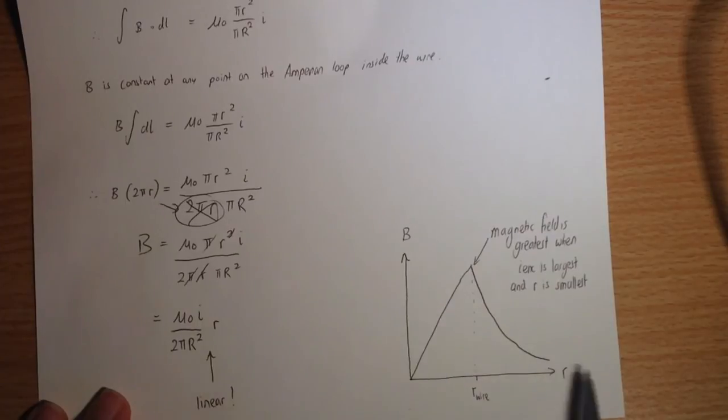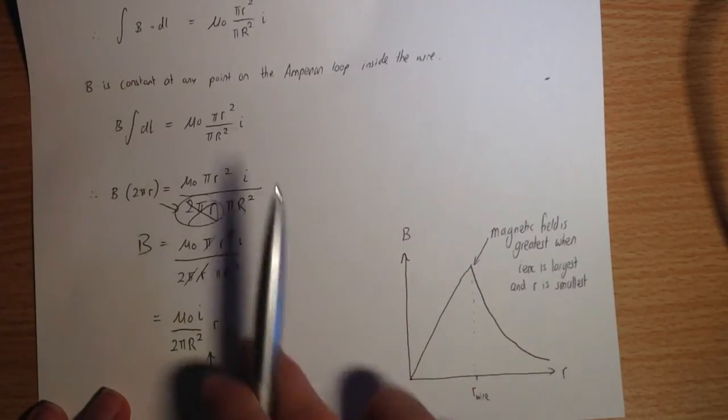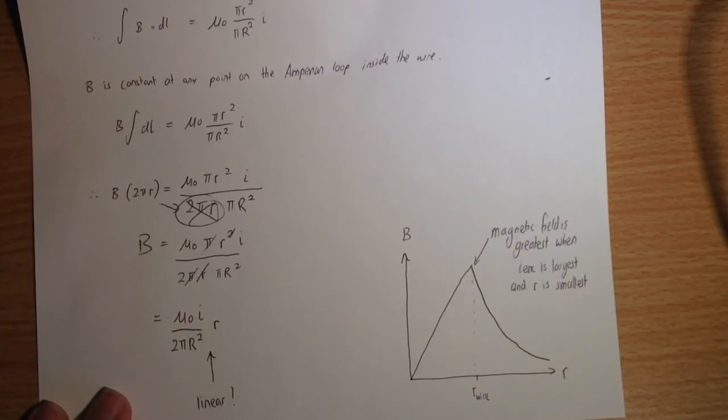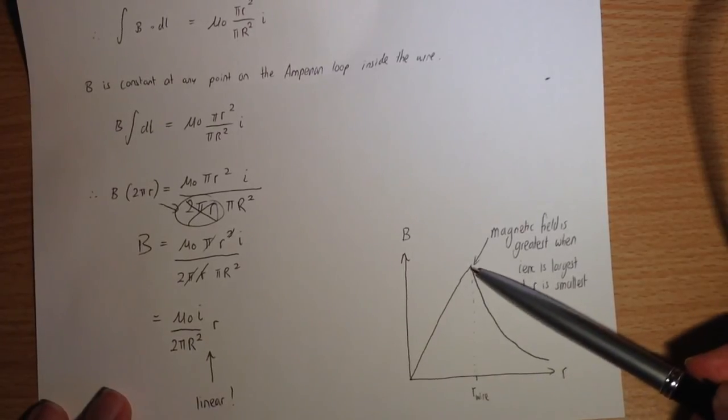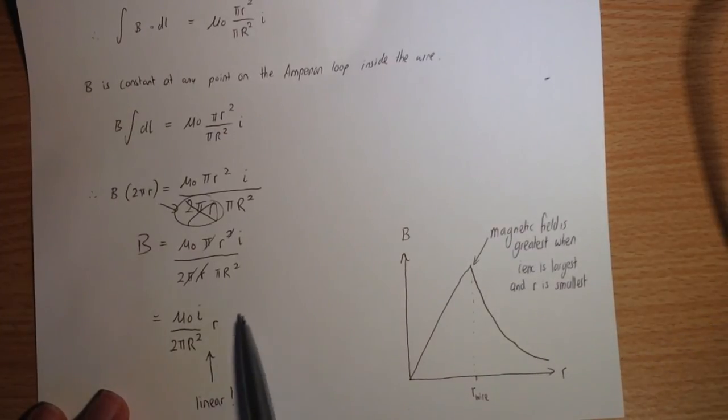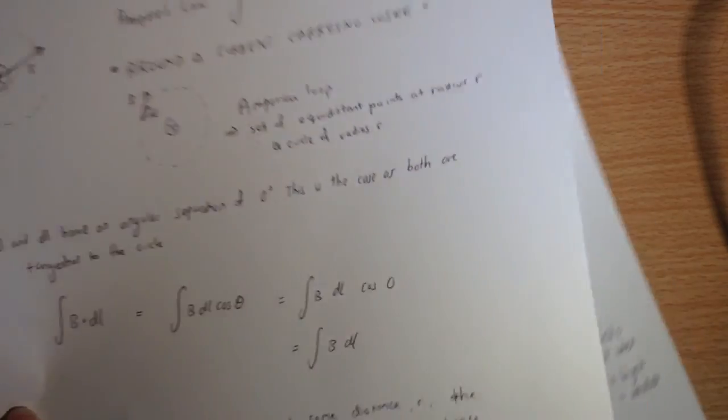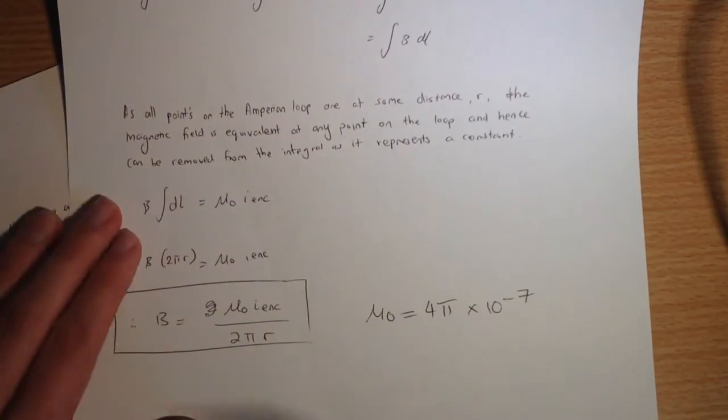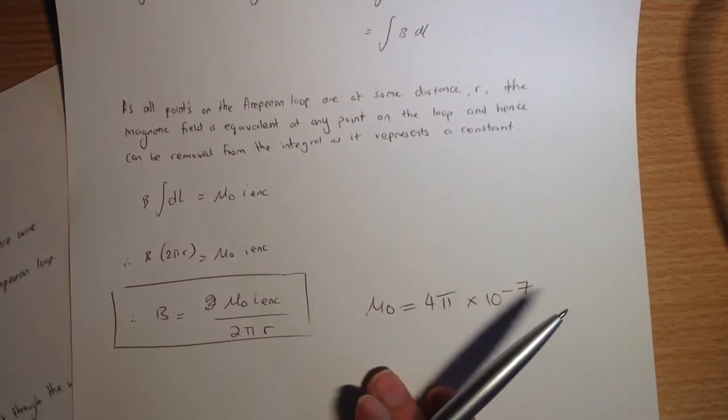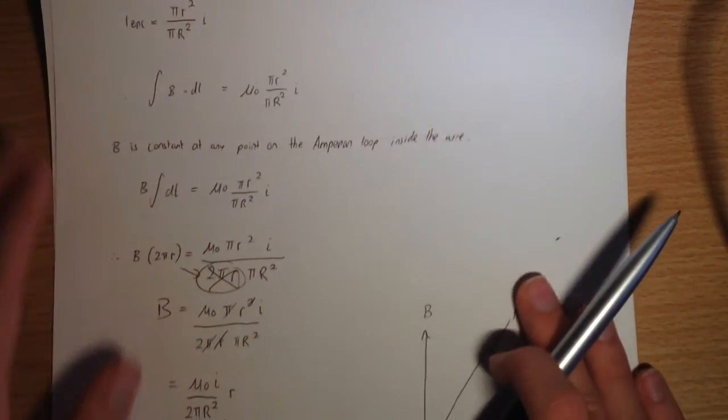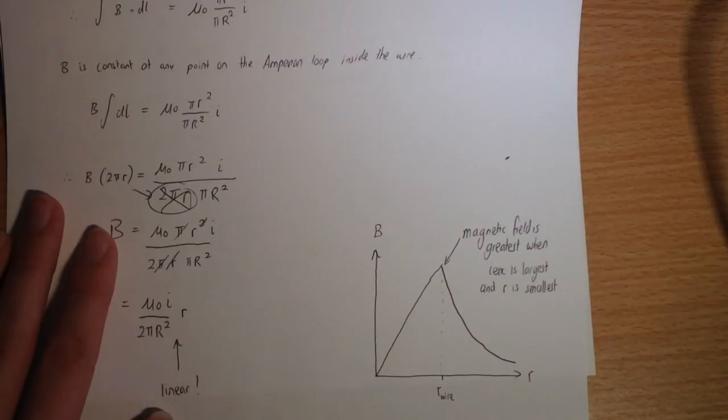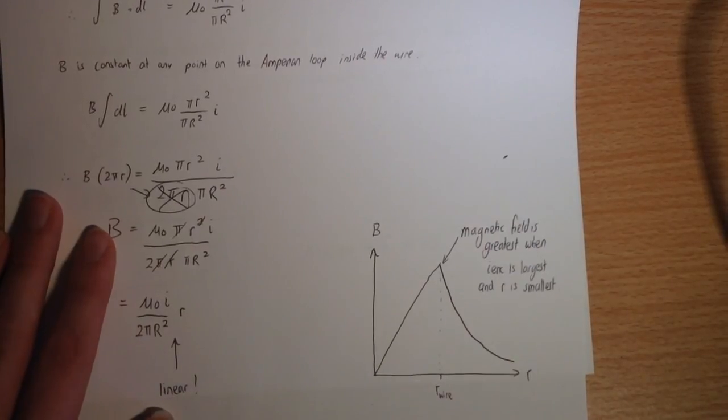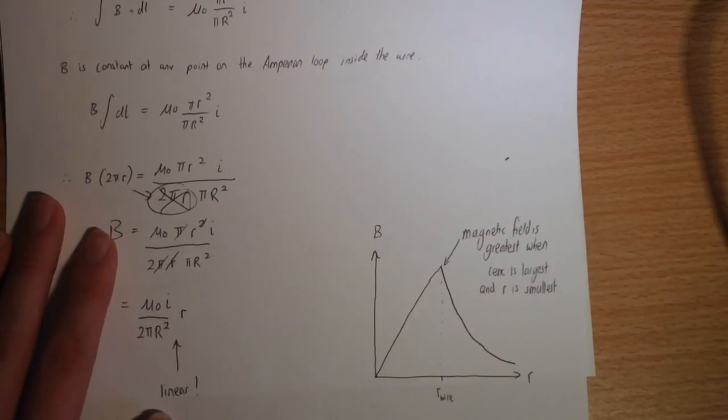So if we plot a graph of this, of b against r, where r is the radius of our Ampereian loop when it's a circle, we can see that inside, before we reach the radius of the wire, it's going to vary linearly the magnetic field at some distance. But then when we get outside, we remember from our first part, we can see this one's linear inside the current carrying wire. But for our very first one, we can see that it's a 1 on r relationship. So exponential decay. So we're going to get it fading off as 1 on r here because of that proportionality between b and r. So we know that the magnetic field is greatest when i enclosed is largest and r is smallest.